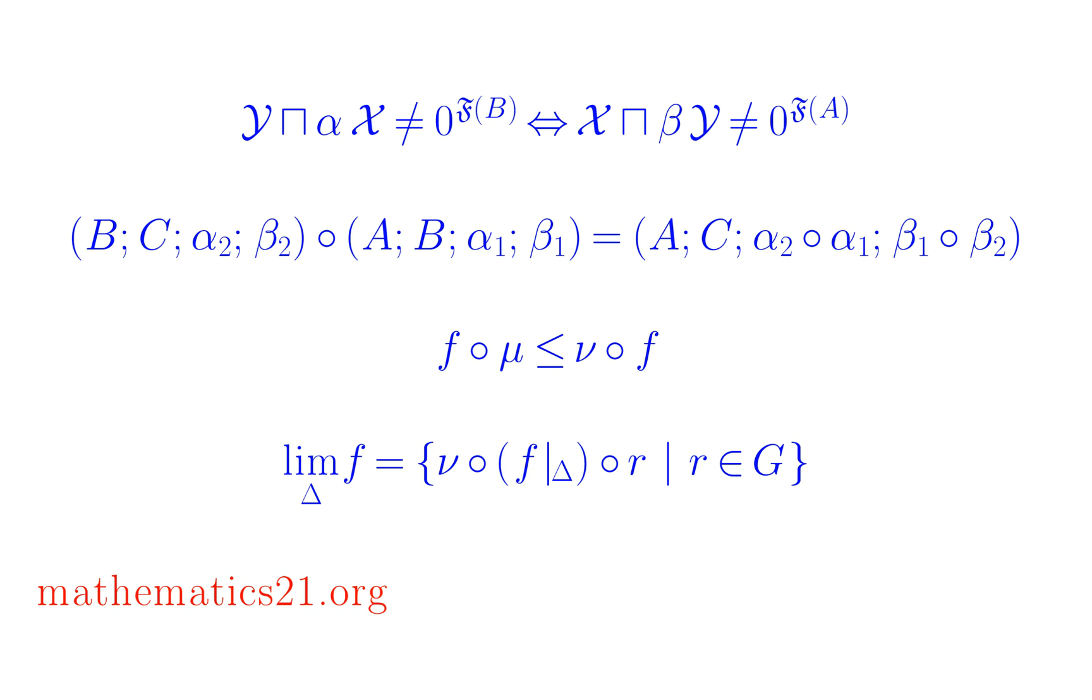Funkoids and reloids can be combined. The resulting operation composition, named by analogy with the composition of functions, is associative. Such a structure is called a semigroup. This is an algebraic structure and the properties of funkoids, such as, for example, continuity, are described by algebraic formulas.